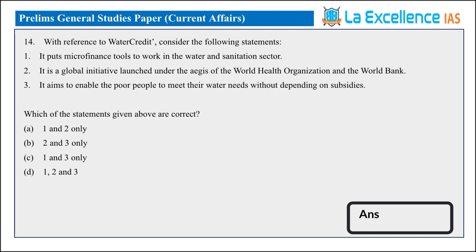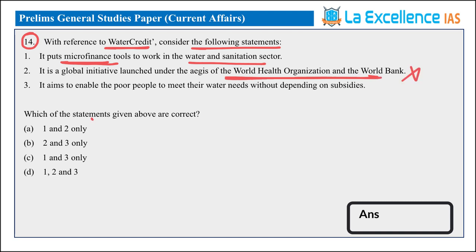First one, this is Set A, 14th question, related to Water Credit. What is Water Credit? Consider the statements related to it. Statement 1: Water Credit is a microfinance tool — Yes, this is correct. Statement 2: It is launched by an intergovernmental initiative — Water.org is an NGO, not an intergovernmental initiative as mentioned in statement 2. So statement 2 is incorrect.